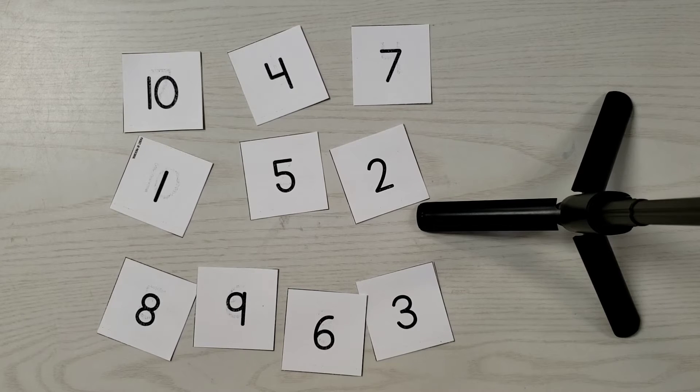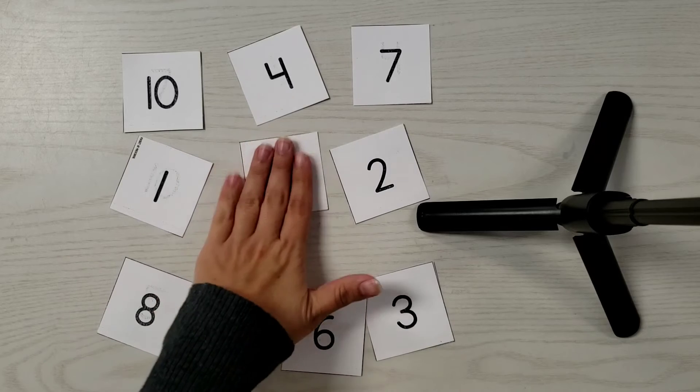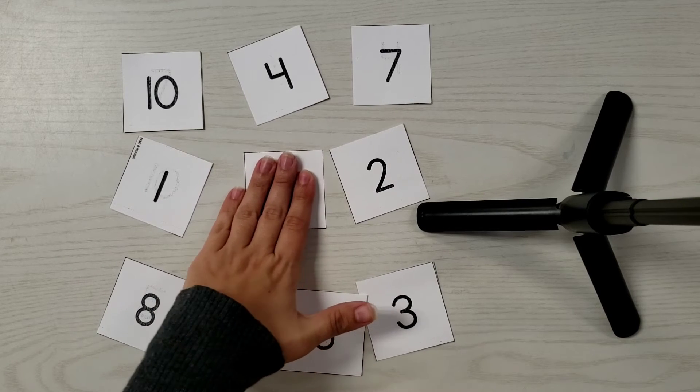So what you will do is you will call out a number, for example five, and you want your child to be able to tap the five.